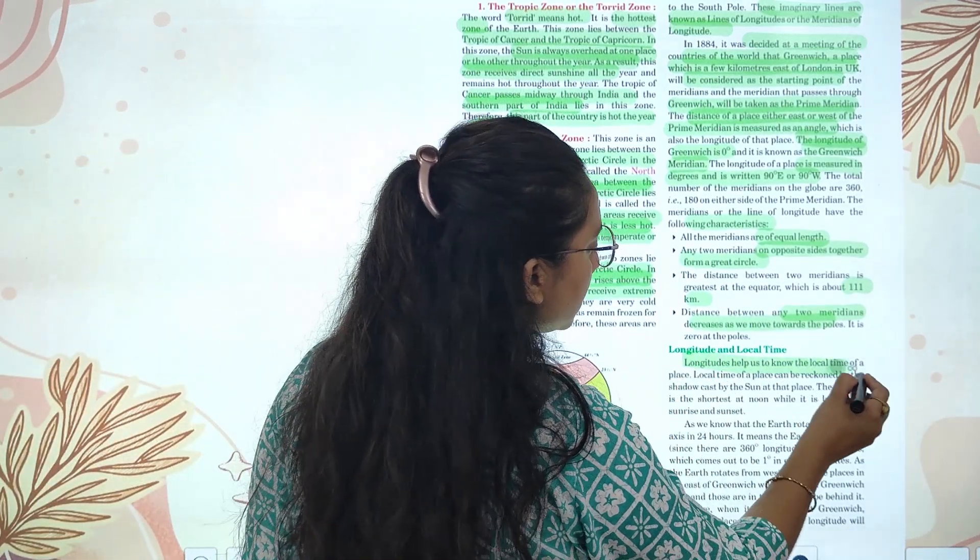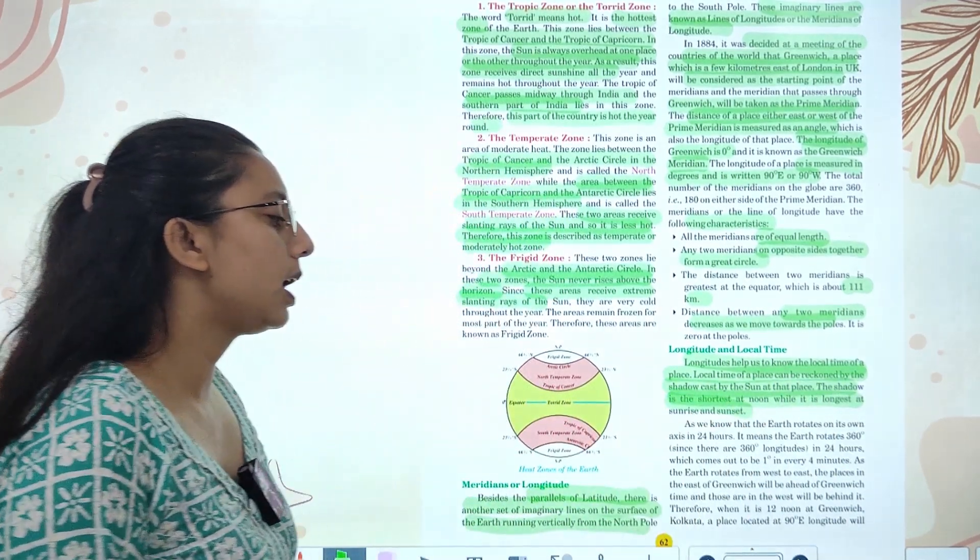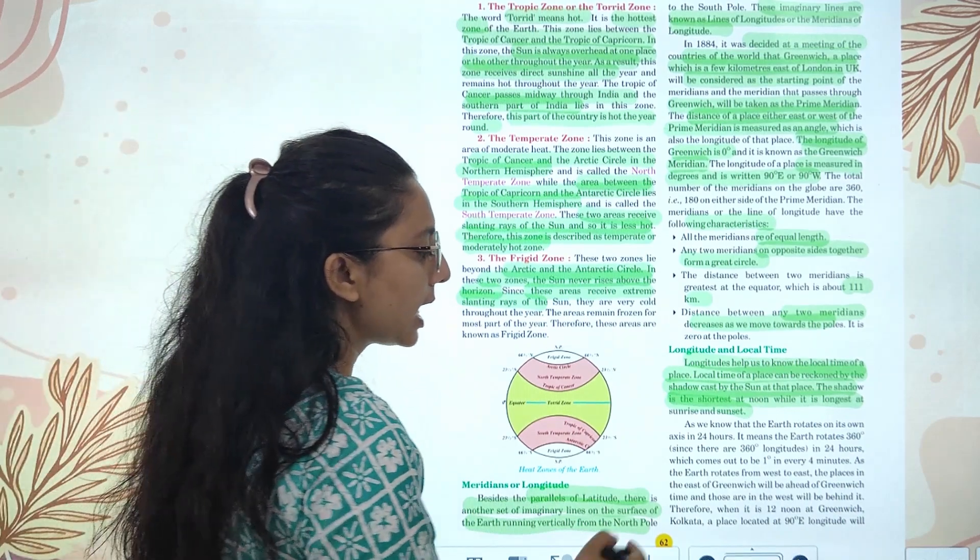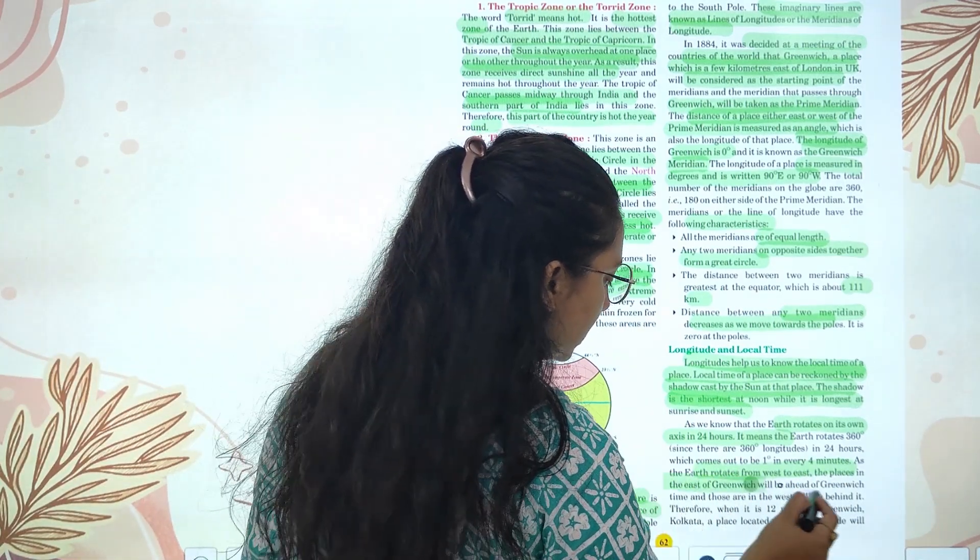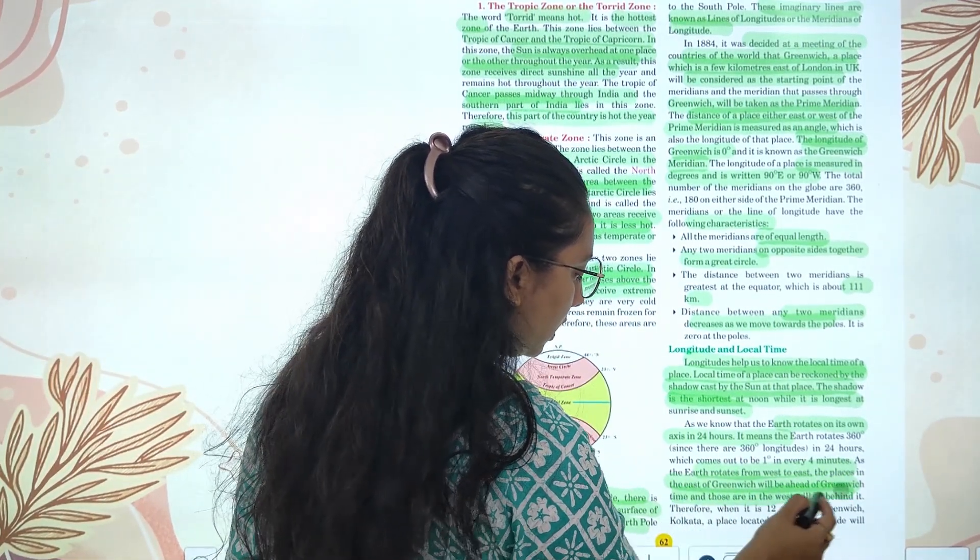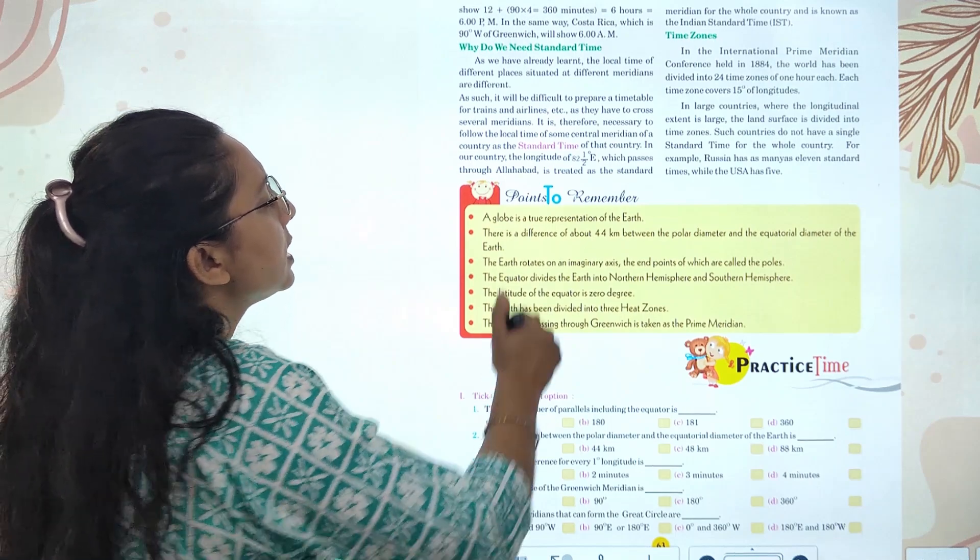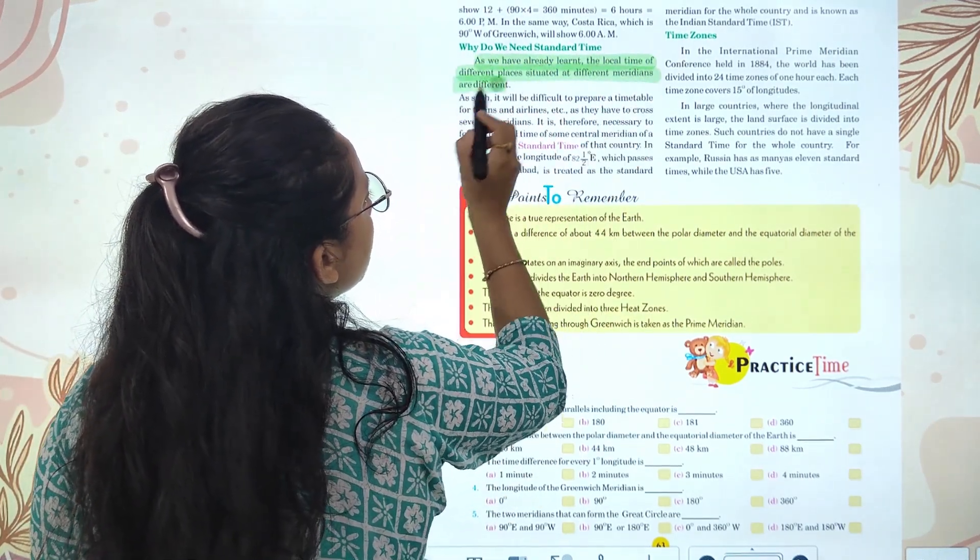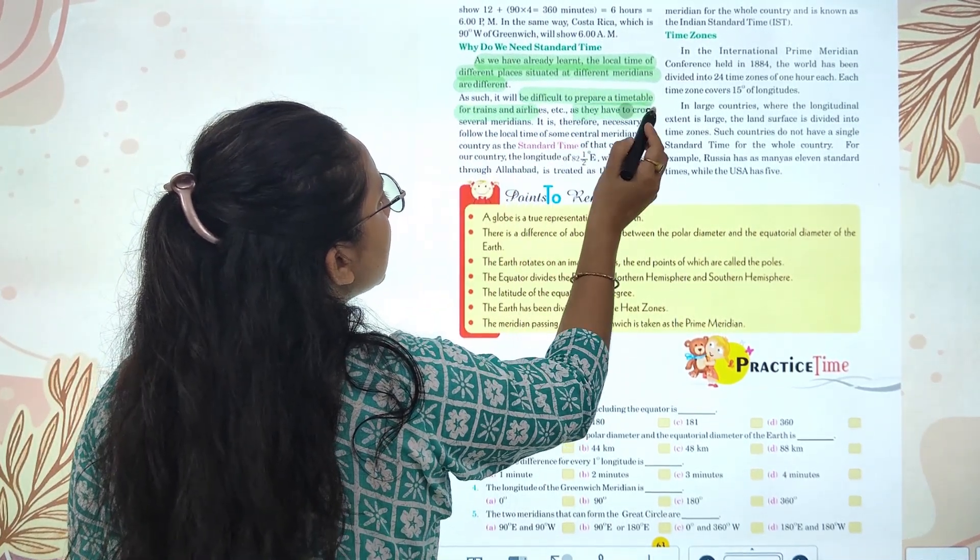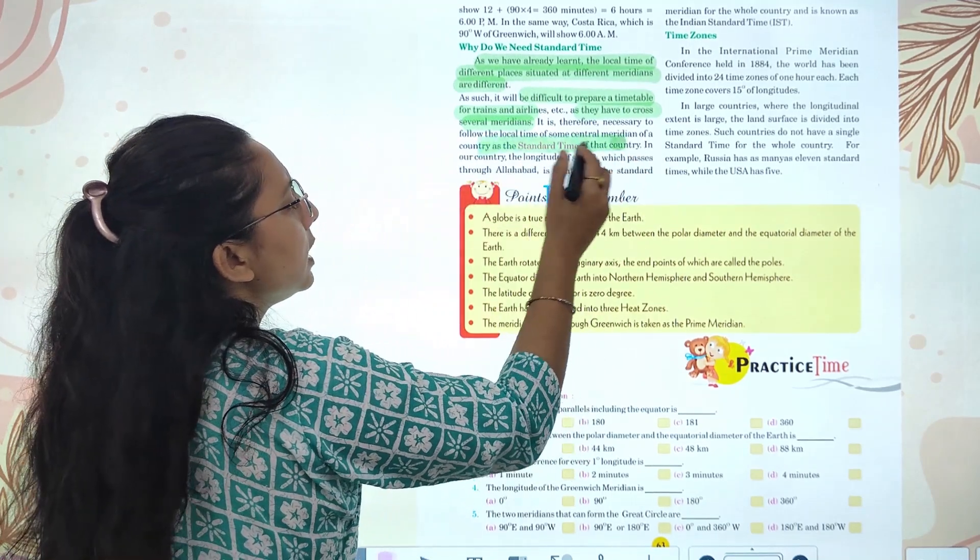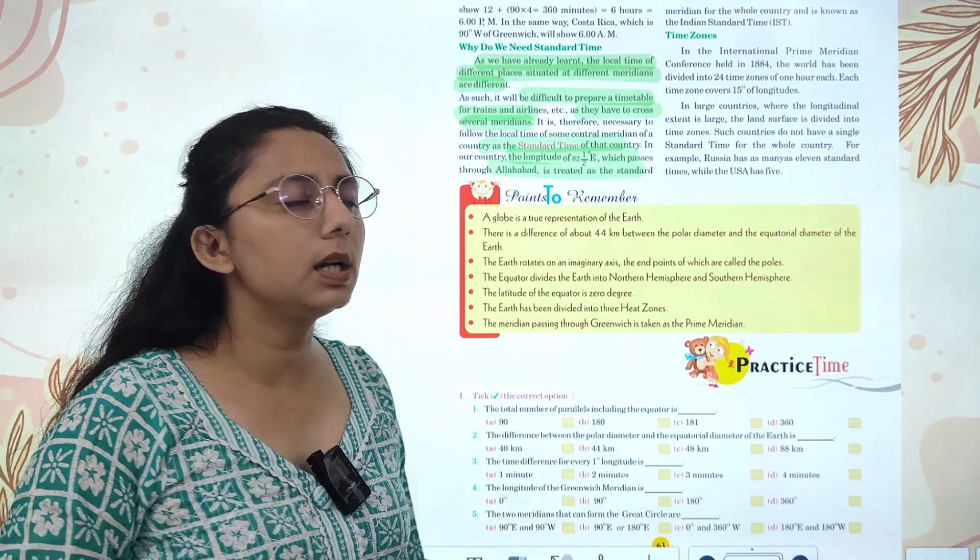Longitude and local time. Longitude helps us to know the local time of a place. As we know, Earth rotates on its axis in 24 hours, rotating 360 degrees from west to east. Places in the east of Greenwich will be ahead of Greenwich time. For example, when it is 12 noon at Greenwich, Kolkata, located at 90 degrees east, will be ahead. Why do we need standard time? As the local time of different places situated at different meridians varies, it will be difficult to prepare a timetable for trains or airlines. This is why countries adopt a standard time. In India, the standard meridian is 82 and a half degrees east, which has passed through Allahabad.